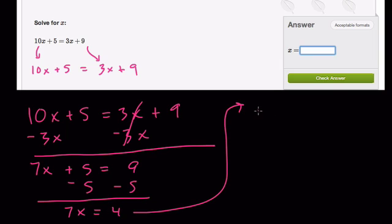And lastly, when we solve 7x equals 4, we divide both sides by 7. And x is equal to 4 sevenths. That would be your answer here, because these two sevens cancel out.